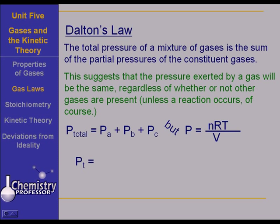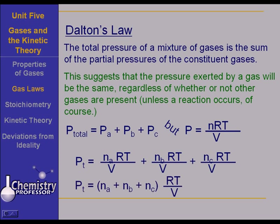In that case, then, the total pressure is equal to the moles of A times RT over V plus the moles of B times RT over V plus the moles of C times RT over V, etc. And factoring out RT over V, we have that the total pressure is equal to the sums of the moles of the constituent gases times RT over V.